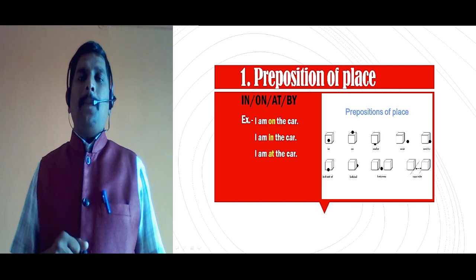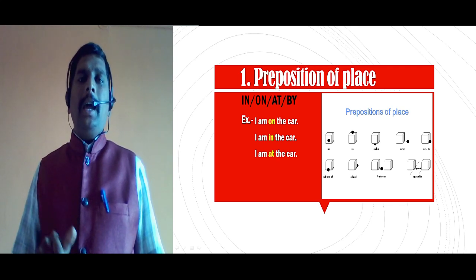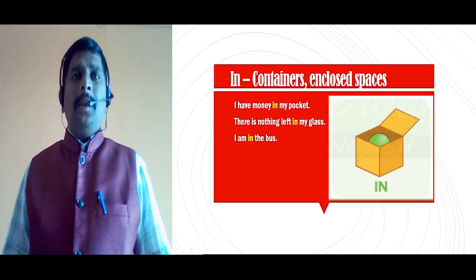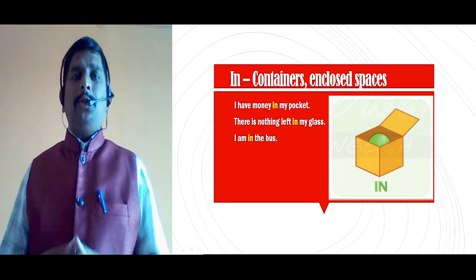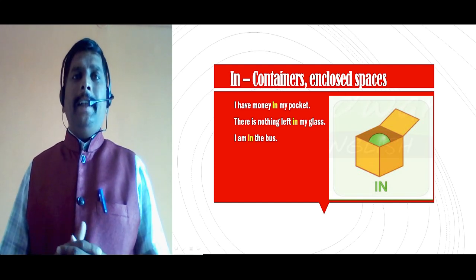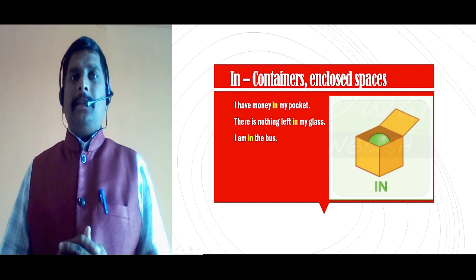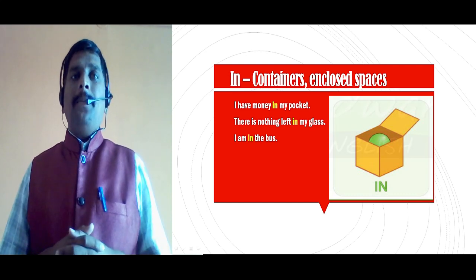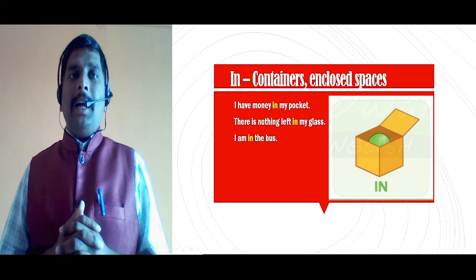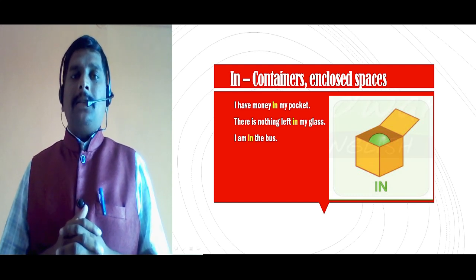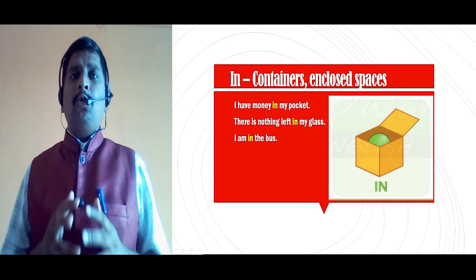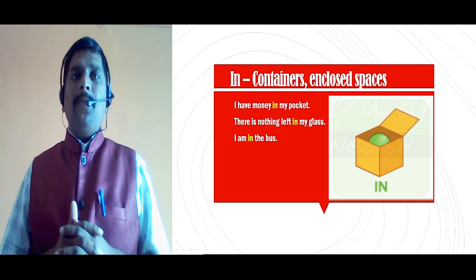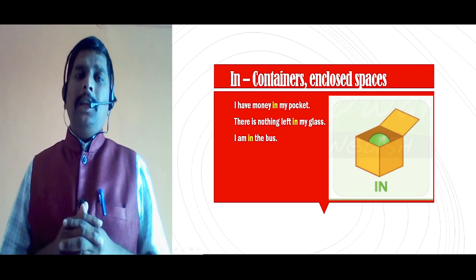In the preposition of place, there is on, in, at, and by. See the use of the 'in' preposition. 'In' is used to show containers and enclosed spaces. For example: I have money in my pocket. There is nothing left in my glass. I am in the bus. These particular examples show enclosed spaces or containers. So this is the use of the 'in' preposition.